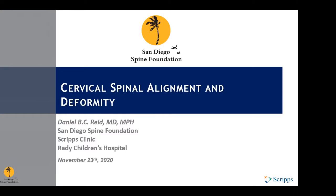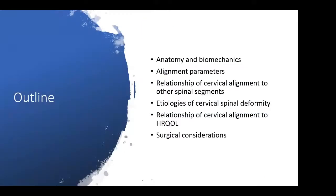This talk is on cervical spinal alignment and deformity. From the outline of the talk, we're going to first talk about anatomy and biomechanics, then get into specific alignment parameters, and then the relation of these parameters to the other spinal segments in the thoracic and lumbar spine, then move on to the etiology of cervical spinal deformity, the relationship to health-related quality of life outcomes, and then considerations for surgical intervention.